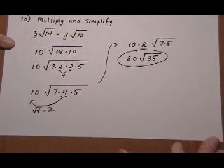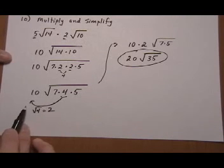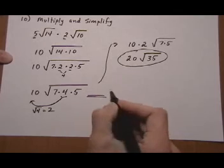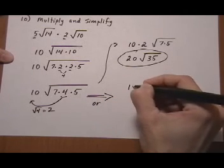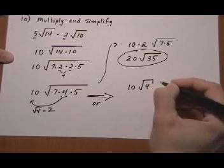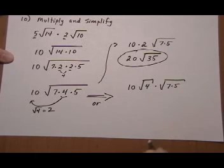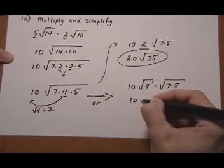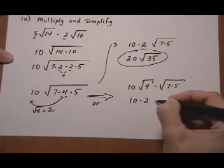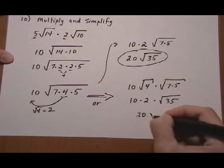And you can also do an intermediate step here, if you don't like this way of kind of pulling it out and taking the root automatically like that. From there you could say, 10 times root 4. Give it its own root. And then, just keep the 7 times 5 in their own radical also, because there's no reason to split them up, because we can't do a square root of them anyways. Then that would give us 10 times 2 times root 35, or 20 root 35.